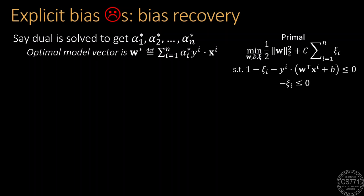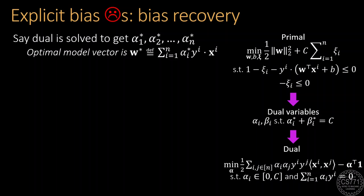Recall that the primal problem had 2n constraints corresponding to which we had introduced 2n dual variables alpha_i and beta_i.